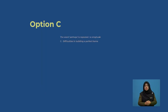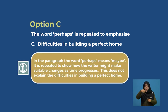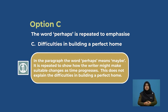What about option C? The word 'perhaps' is repeated to emphasise C, difficulties in building a perfect home. The word 'perhaps' means maybe — it is repeated to show how the writer might make suitable changes as time progresses. This does not explain the difficulties in building a perfect home. So option C cannot be accepted.